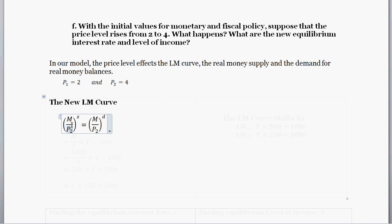So how do we find the LM curve? Well, we set the money supply for real money balances equal to our demand for real money balances. In our previous problem, we found that the demand for real money balances is described by this equation Y equals 100R. And then the money supply is just the money supply set by the central bank divided by the current price level. So where before the current price level was P sub 1, now the current price level is our P sub 2.